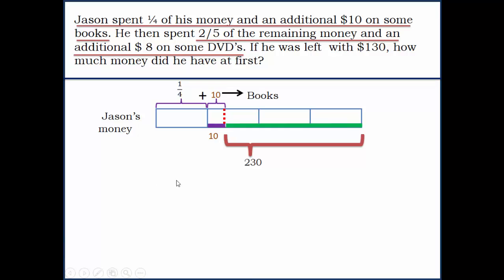Incidentally, this $240 represents the three units that we have here, so three units equals 240. One unit is 240 divided by 3, which is 80.